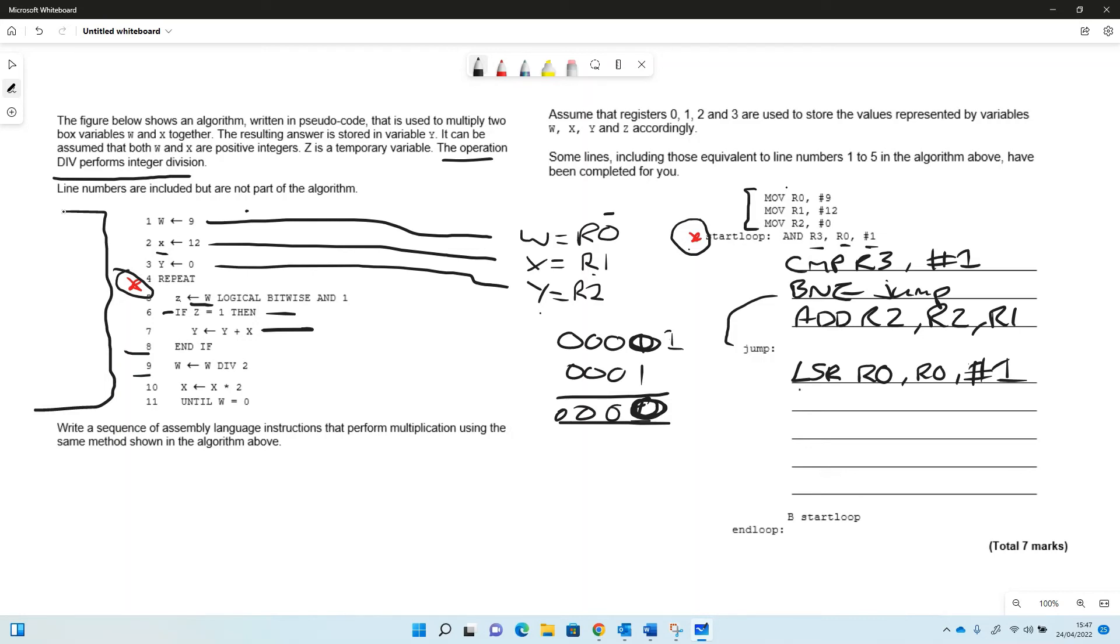And then left shift logical shift left r1, r1 again just there. And we're going to then do this until w equals zero.